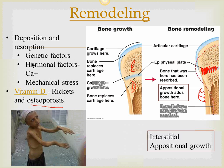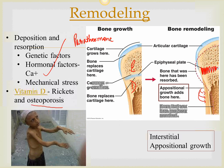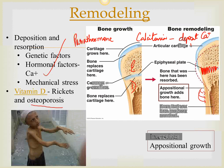Deposition and resorption are also dependent on mechanical stress, genetic factors — some people have heavy bones in their family — and hormonal factors, because certain hormones are important in calcium metabolism. The two hormones that play a prominent role are parathormone and calcitonin. They do exactly opposite things: calcitonin helps to deposit calcium in bones, while parathormone removes calcium from bone.